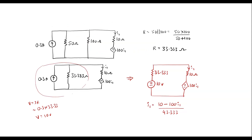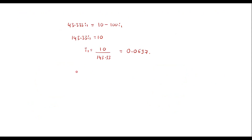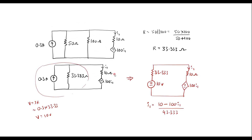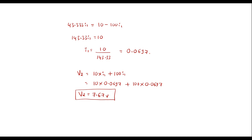Now let me find the voltage at node 2, which is the voltage across the 10 ohm resistor plus 100·I1. Therefore V2 = 10·I1 + 100·I1 = 110 × 0.0697, which gives approximately 7.67 volts. So 7.67 volts is the voltage at node 2. Thank you for watching.